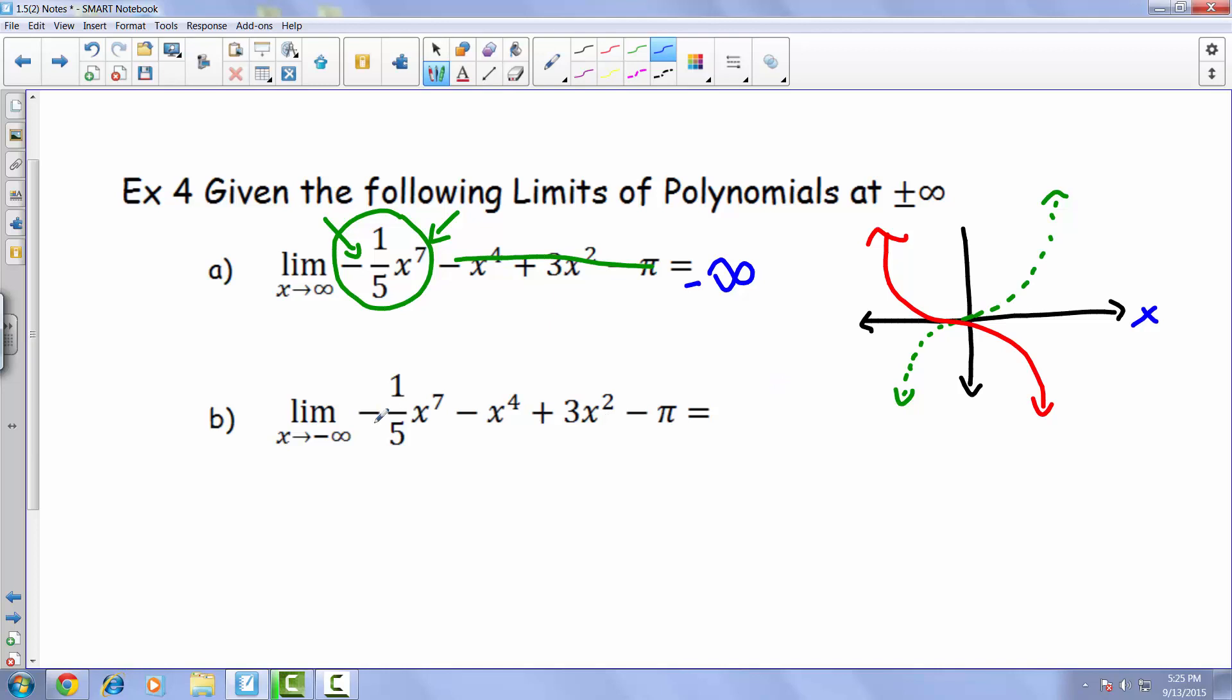Now for b we are looking at the limit as x is going toward negative infinity of the same function, and we really only care about this leading coefficient. We have already drawn a quick sketch of the graph. So as you go outwards towards negative infinity for x, we see that our red graph is going towards positive infinity for those limits. So this would be positive infinity.